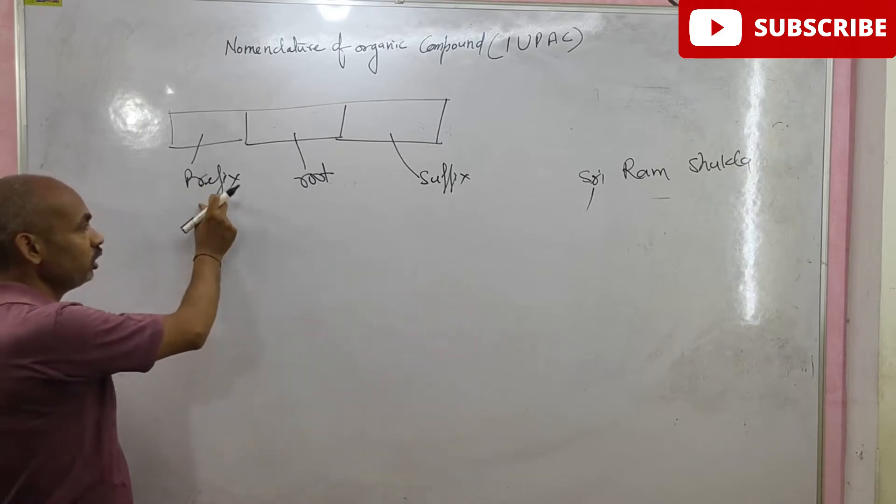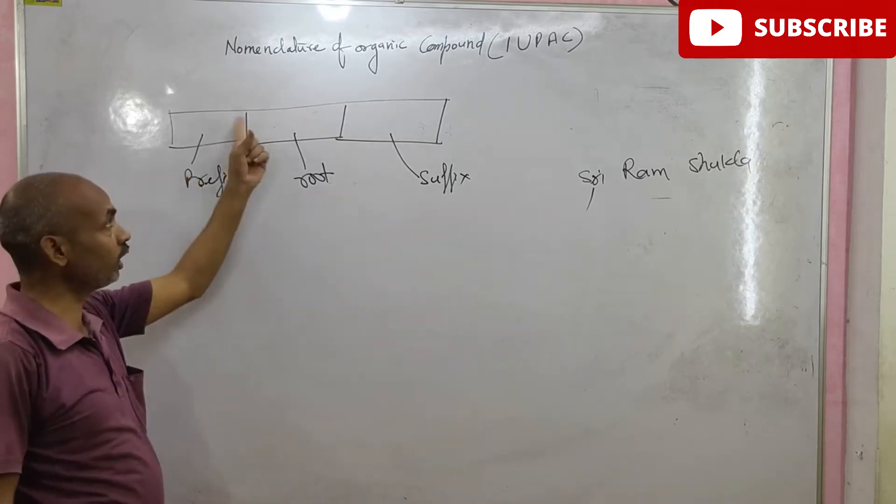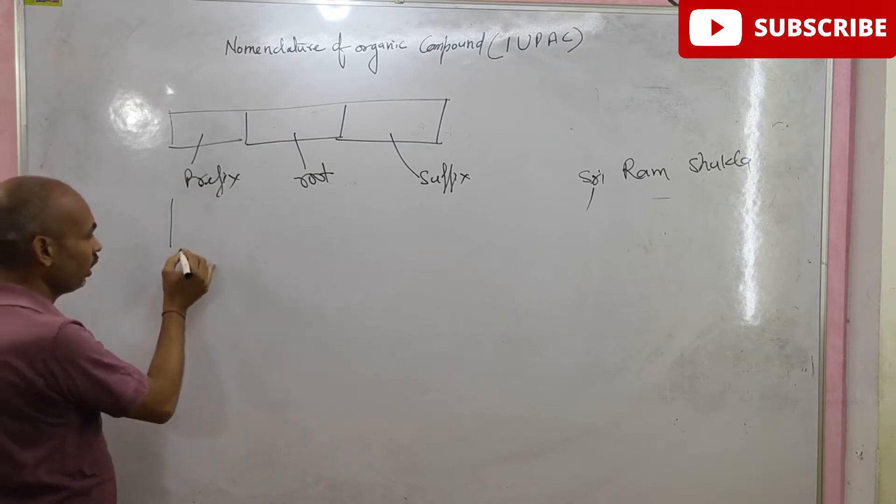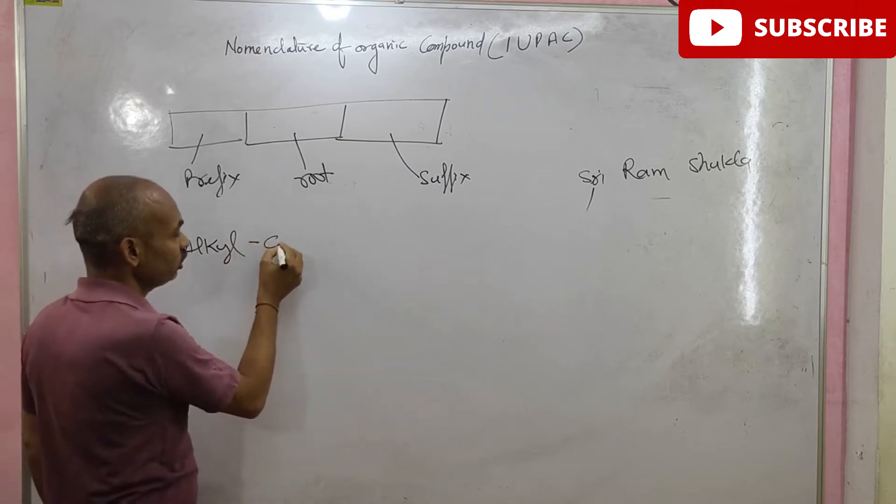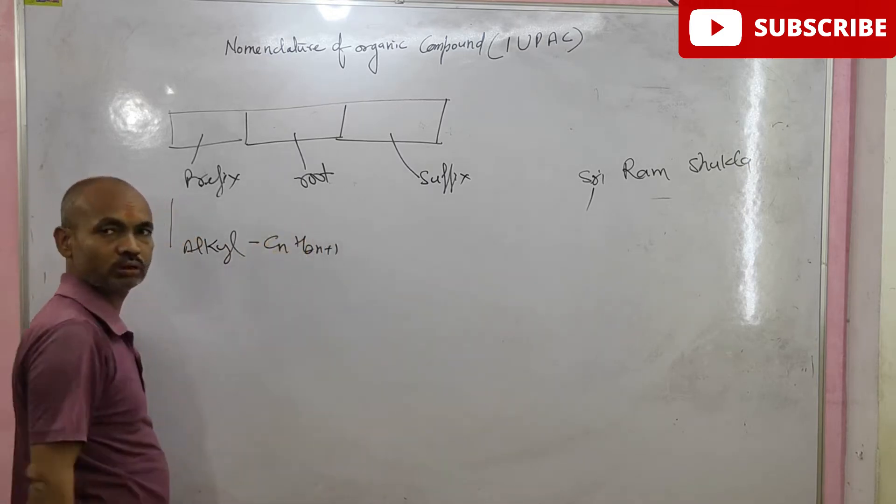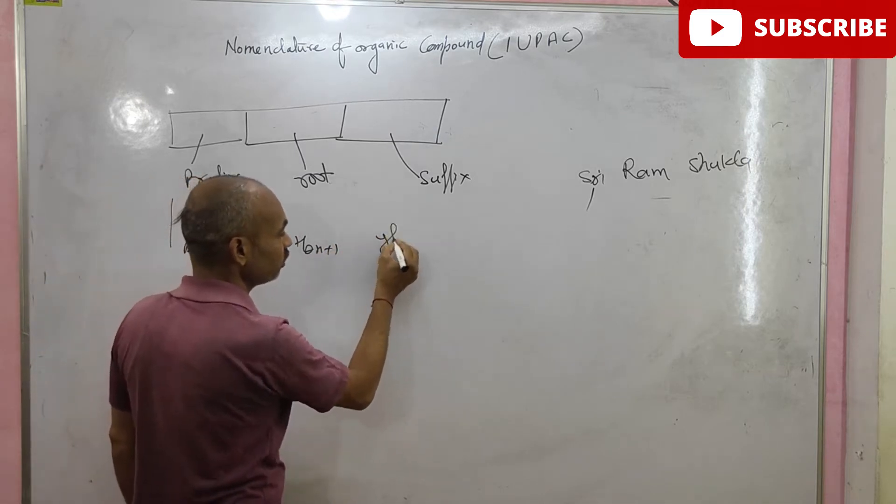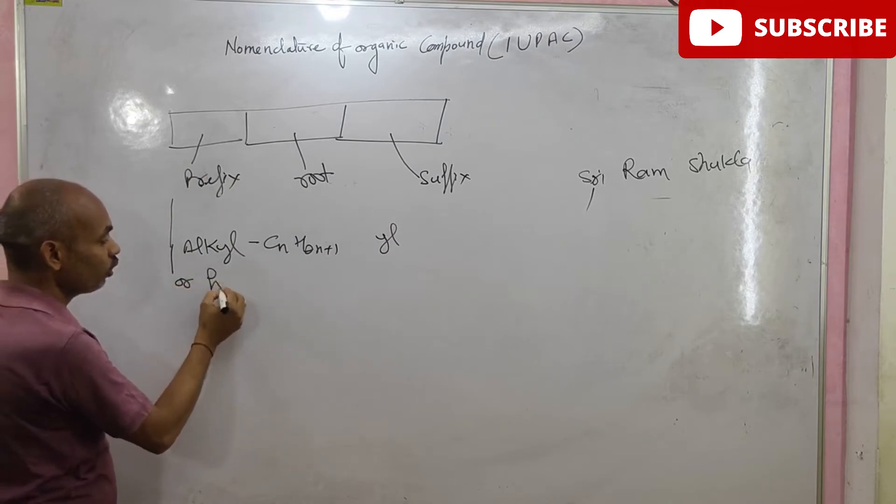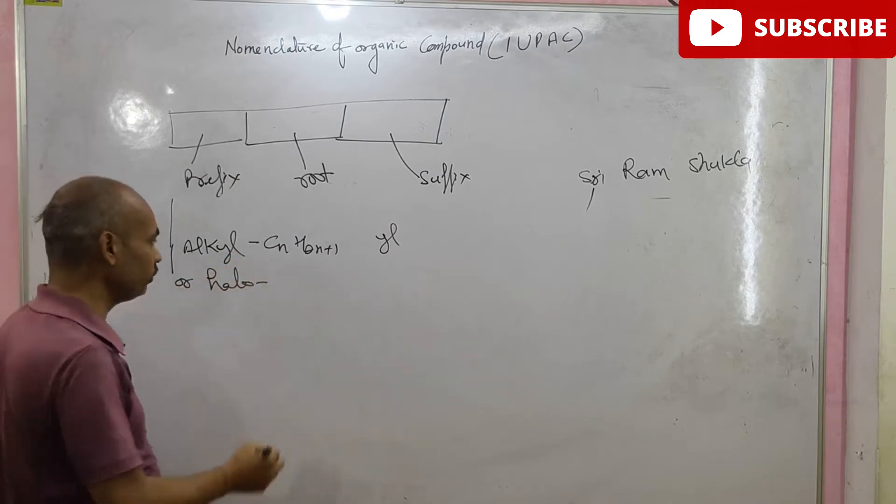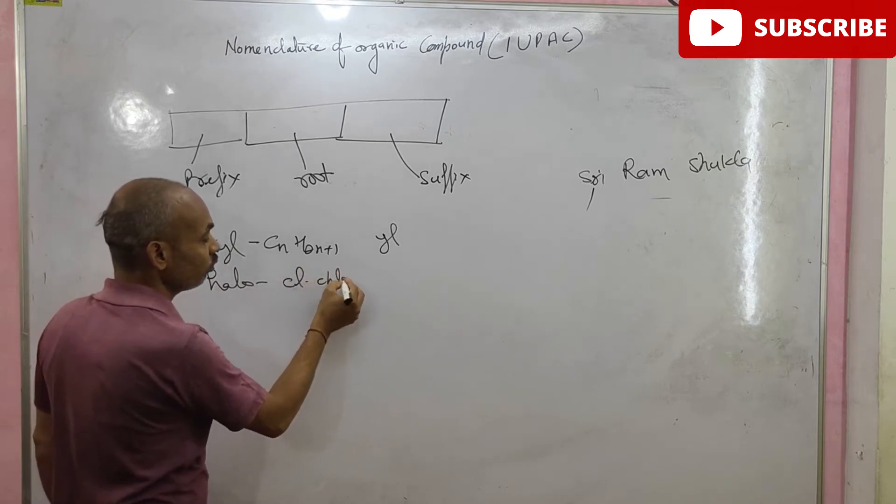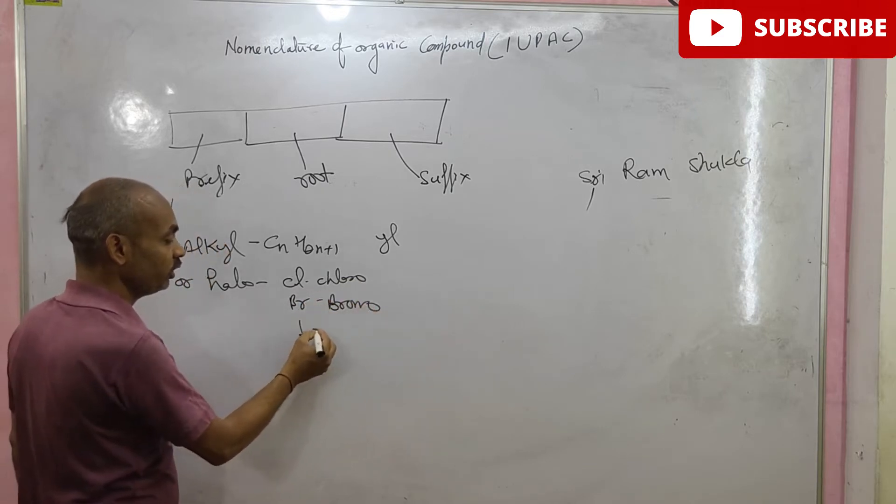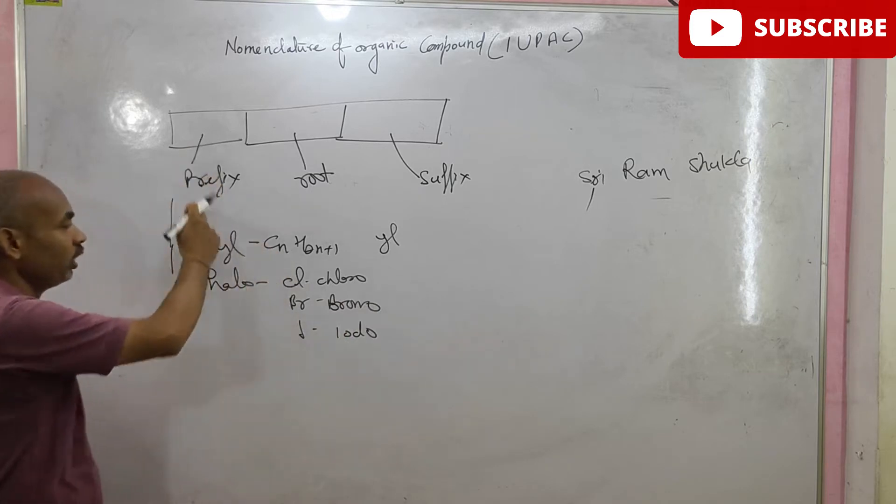Prefix is mainly depend on alkyl. What is alkyl? CNH2N plus 1. And its suffix is IL. R. Halo compound. Halo means if C are chloro, if B are bromo, if I, iodo. These are prefix.